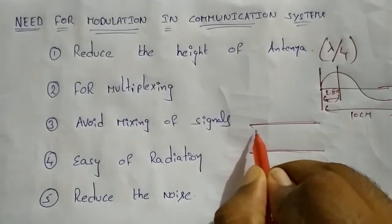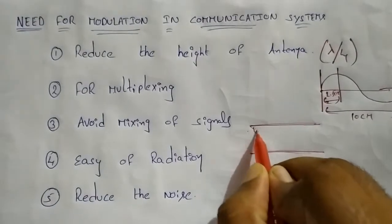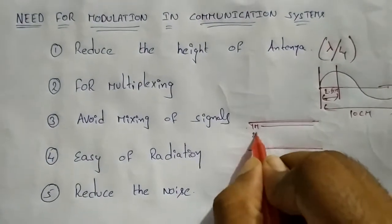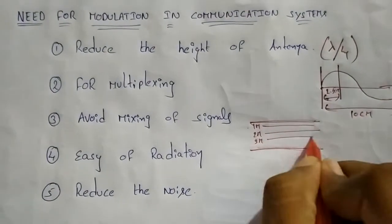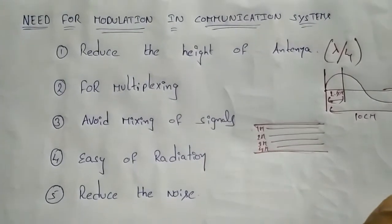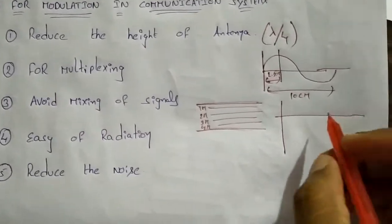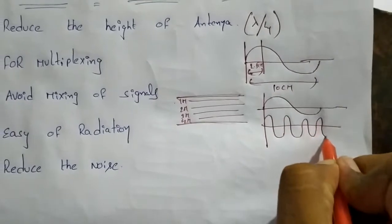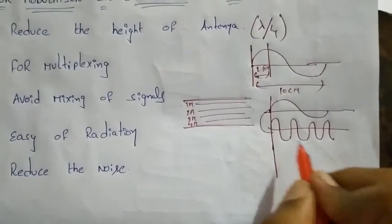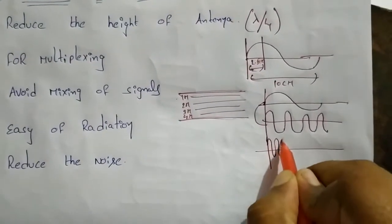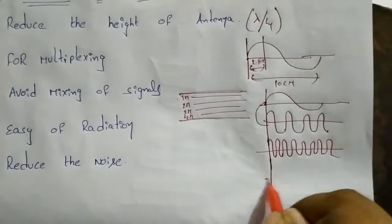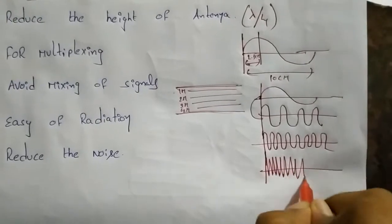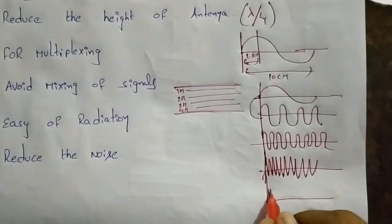A carrier is a high-frequency signal used to carry a message signal. For example, a 1 MHz carrier carries one message signal, a 2 MHz carrier carries another, a 3 MHz carrier carries another, and a 4 MHz carrier carries yet another. Each carrier operates at a different frequency.